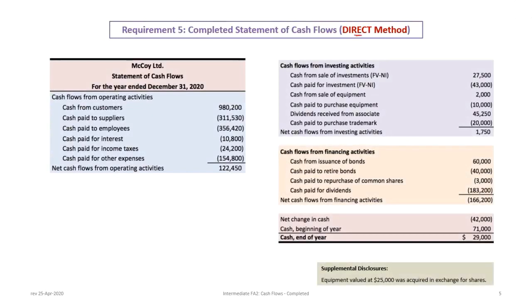If we look at what the direct method would look like — the only difference is the operating activity section; cash from investing and financing are the same, and total operating cash flow is still $122,450. The direct method provides a much cleaner, more understandable statement. Even a basic user can see: cash received from customers of $980,200, cash paid to suppliers of $311,530, cash to employees, cash for interest, cash for taxes, and cash for everything else.